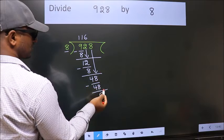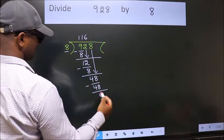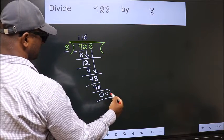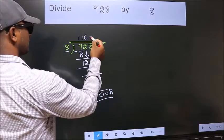No more numbers to bring it down, so we stop here. This is our remainder. This is our quotient.